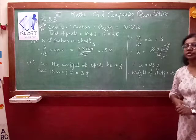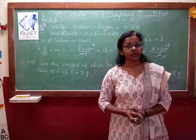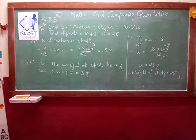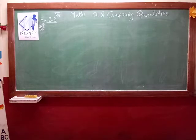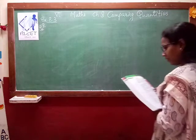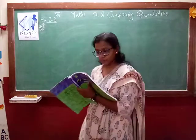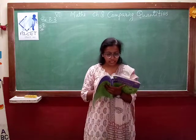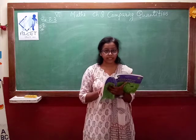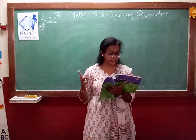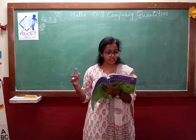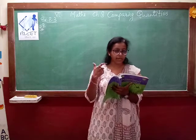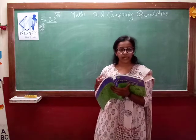This way we can solve question number 7. Move on to question number 8. Try to do it by yourself. Here, what is given? You have the cost price, loss percent, and you want to find the selling price. You can use the formula: selling price equals 100 minus loss percent, divided by 100, multiplied by cost price. With the help of that formula, you can solve question number 8 by yourself.